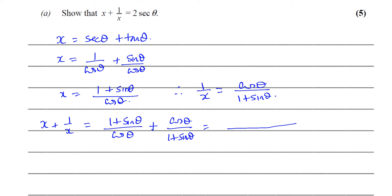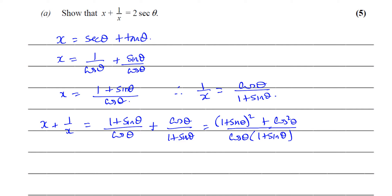They have a common denominator of cos θ times (one plus sin θ). I have to multiply both top and bottom of the first fraction by (one plus sin θ), giving (one plus sin θ)² in the numerator. And I get plus cos² θ from cos θ times cos θ. So I've added these two fractions together with the same denominator, giving (one plus sin θ)² plus cos² θ, all over cos θ times (one plus sin θ).